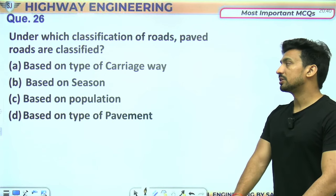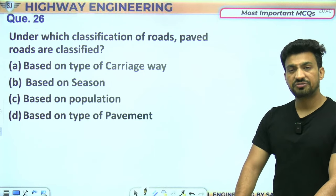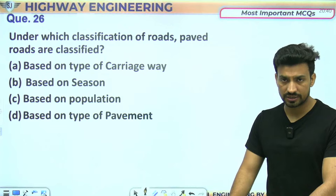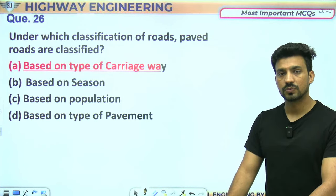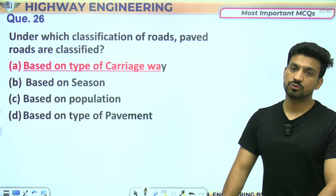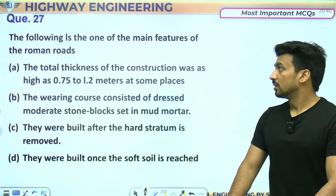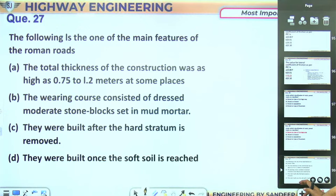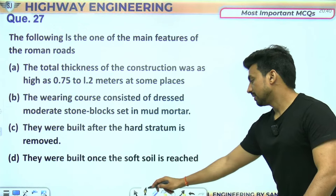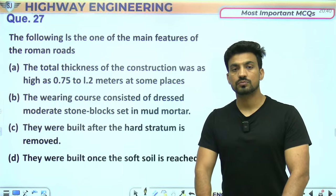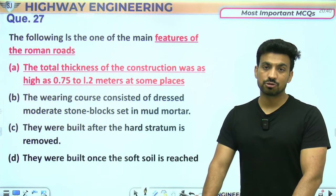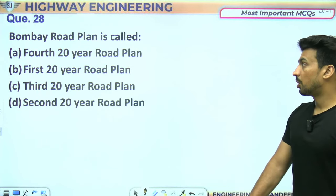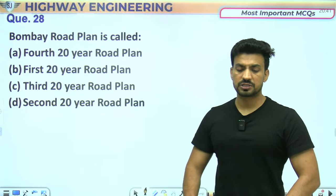Arterial streets वो busy streets हैं किसी urban area की जो traffic को main बड़ी road पर ले जाती हैं। Earthen roads और low cost roads generally village roads के case में use होती हैं। Road का जो part vehicular traffic use करता है उसे carriageway कहते हैं। Fill sections में rural areas पर crown pavements और sloping shoulders surface drainage take care कर लेते हैं।